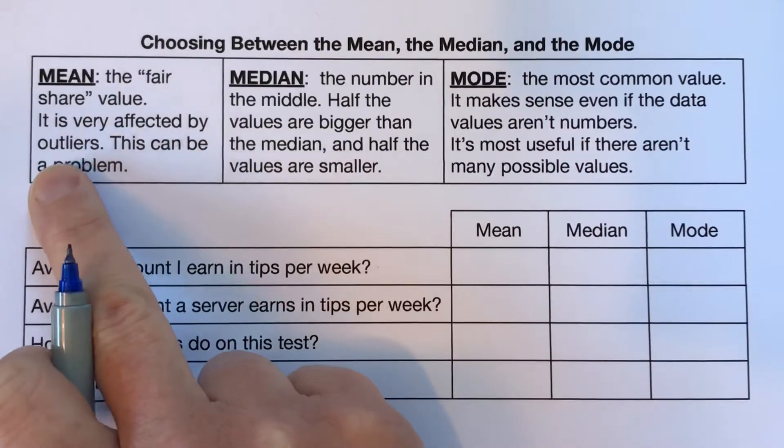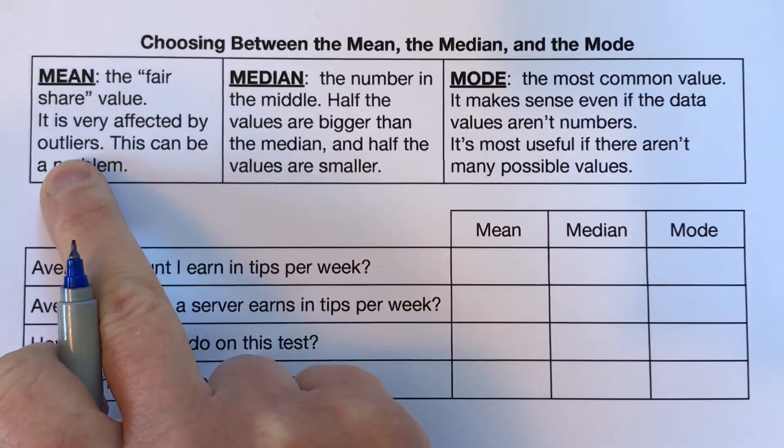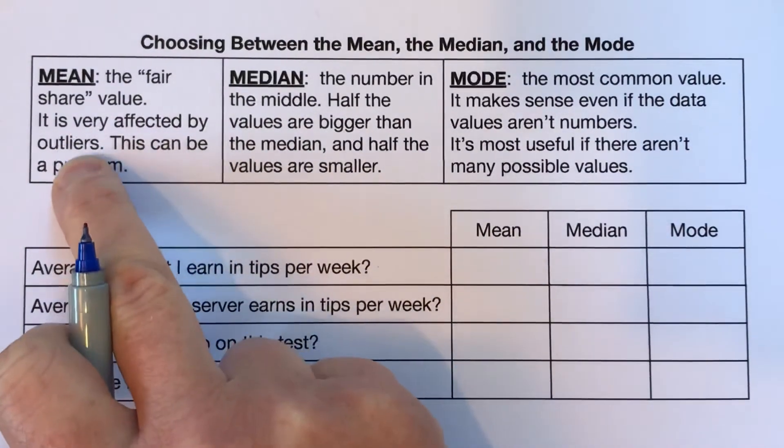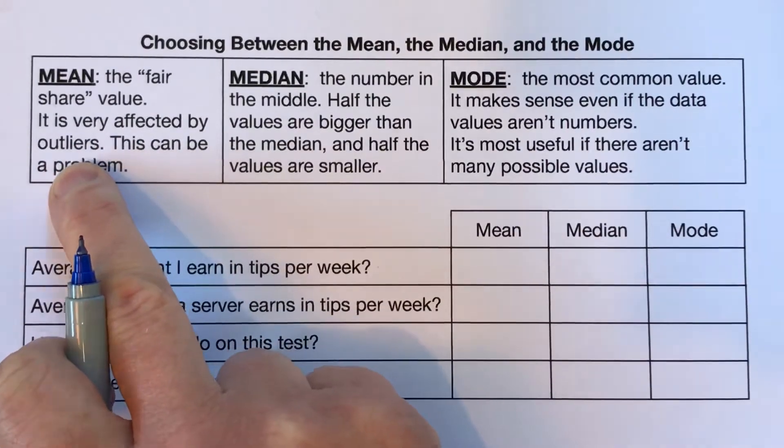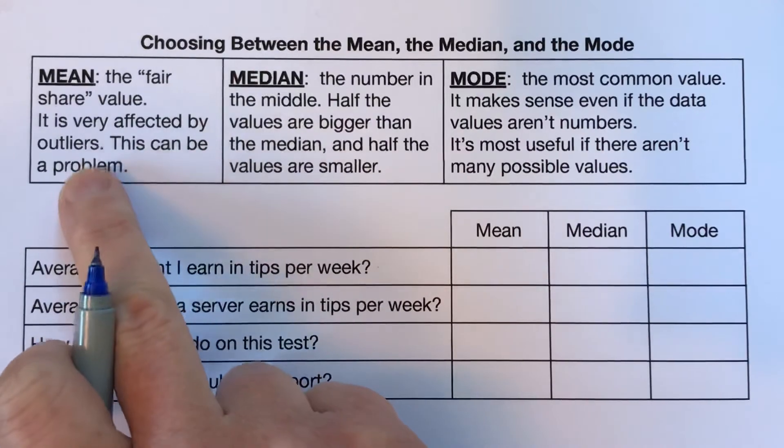So if you have one number that's much, much bigger than the others, it really throws off the mean. Sometimes that's what you want, but sometimes it can be a problem. So you really want to think, is this outlier a particularly important number, and are we kind of sharing these? Or if not, we might not want to choose the mean.